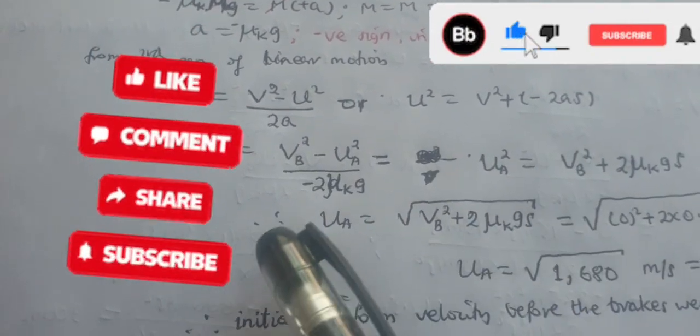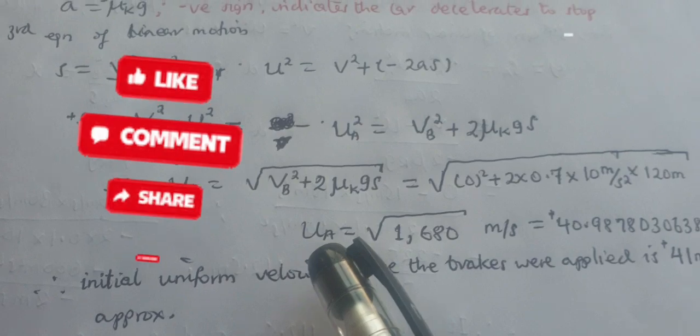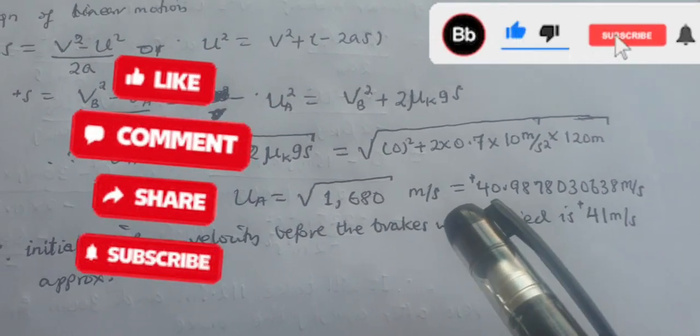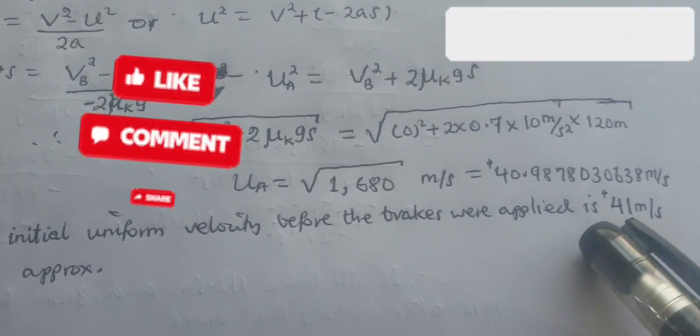When we substitute, we finally find our initial velocity as 40.9 or approximately 41 meters per second.